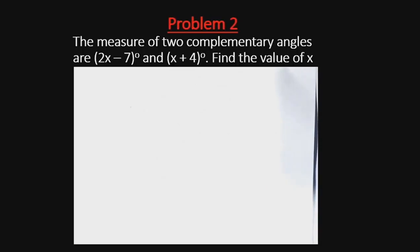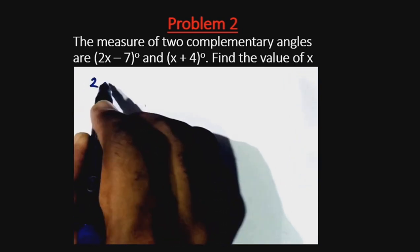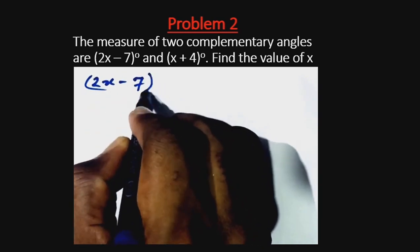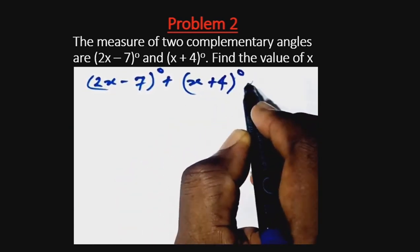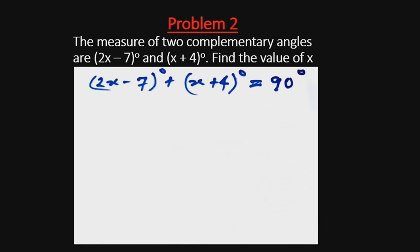Our second problem says: the measure of two complementary angles are 2x minus 7 degrees and x plus 4 degrees. Find the value of x. Remember that complementary angles add up to give 90 degrees. That means 2x minus 7 degrees plus x plus 4 degrees will give us 90 degrees.